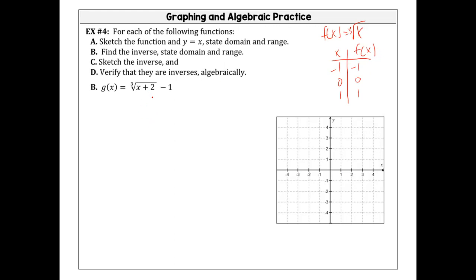The function has a plus two inside, which tells me it shifts left two, and the minus one tells me it shifts down one. So all parent function values shift left two and down one. At negative one, negative one — go left two and down one. At zero, zero — go left two and down one. At one, one — go left two and down one.